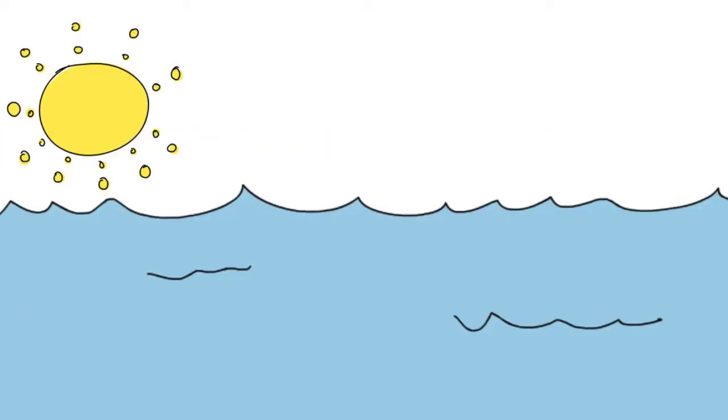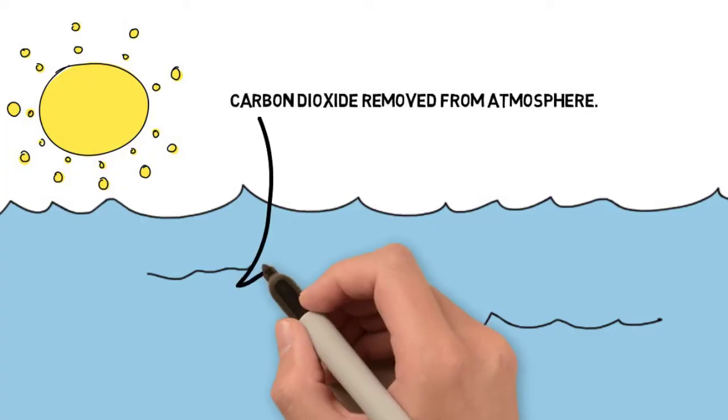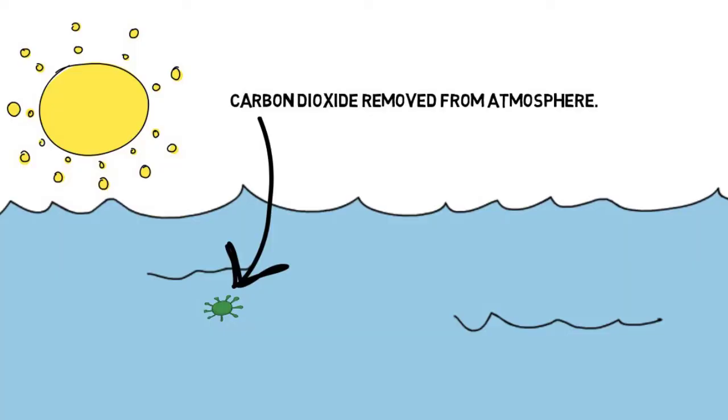In much the same way as on land, carbon dioxide is removed from the atmosphere. It then enters the oceans, where it is used by the phytoplankton to photosynthesize.